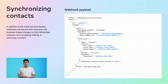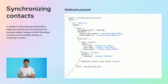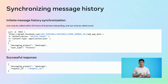The webhooks sent will include the following contact details: full name, first name, and phone number. Apart from the initial sync, webhooks will also be triggered for any modifications made by the business to their WhatsApp contacts, including additions, edits, and deletions. To synchronize message history, make a Graph API request to the same endpoint used for contact synchronization, but instead set the sync type to history.